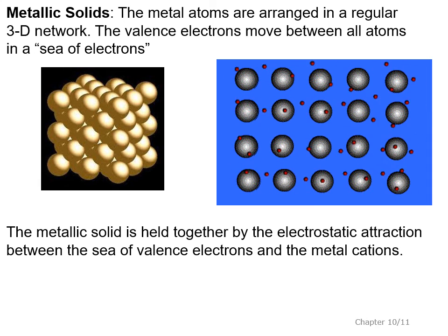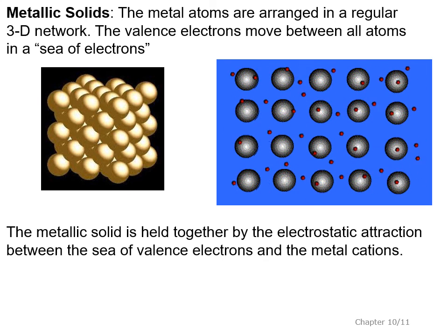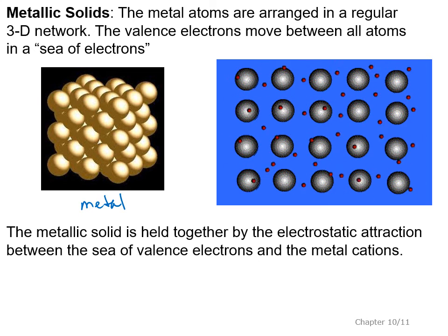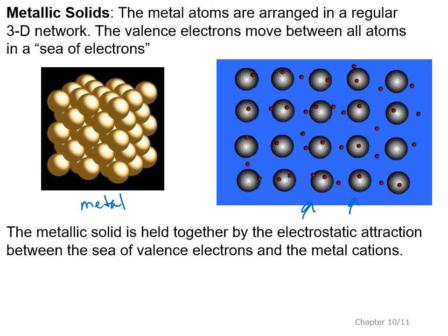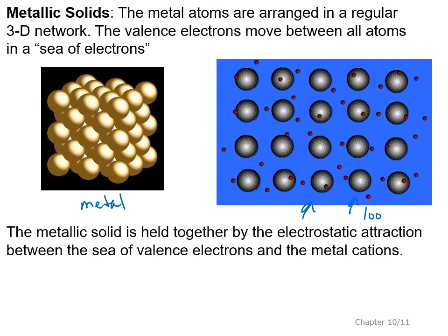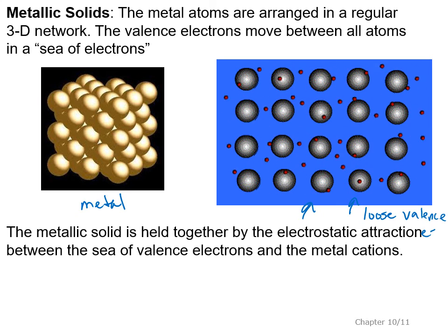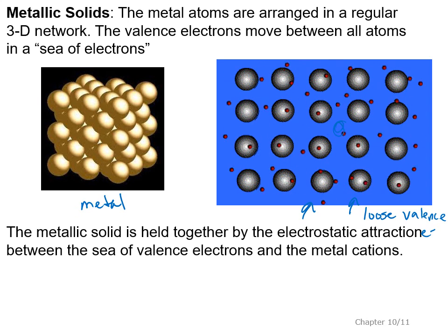Metallic solids use metal atoms arranged in a regular three-dimensional network. The metallic solid is held together by electrostatic attraction between the sea of valence electrons — shown as moving electrons — and the metal cations. These electrons do not belong to any particular atom; you can think of them as loose valence electrons. The positive metal nuclei are attracted to all of these electrons in the middle.